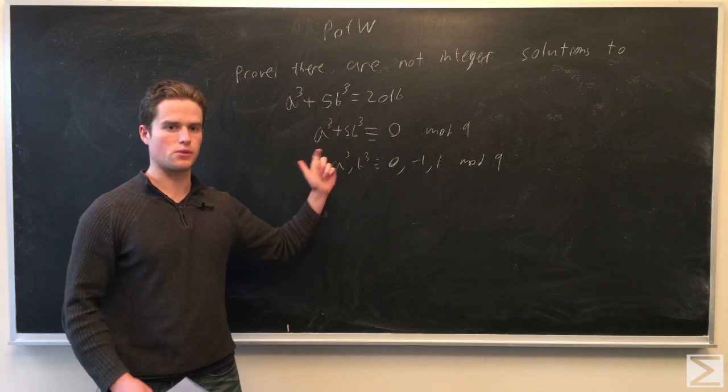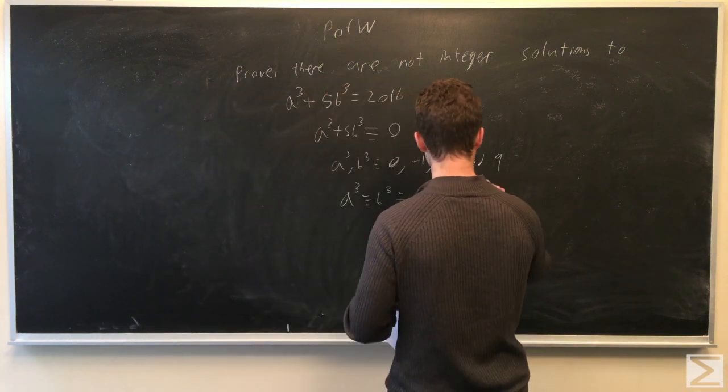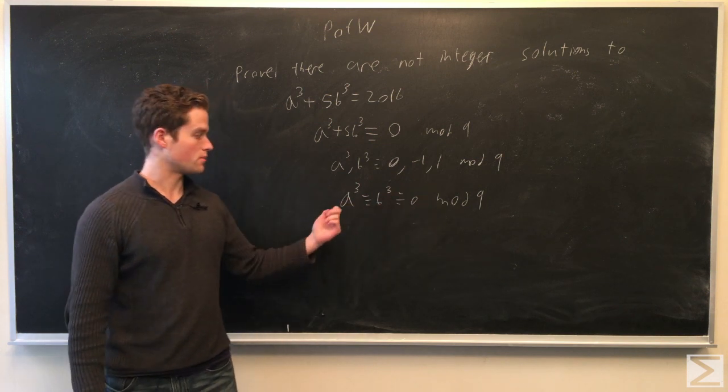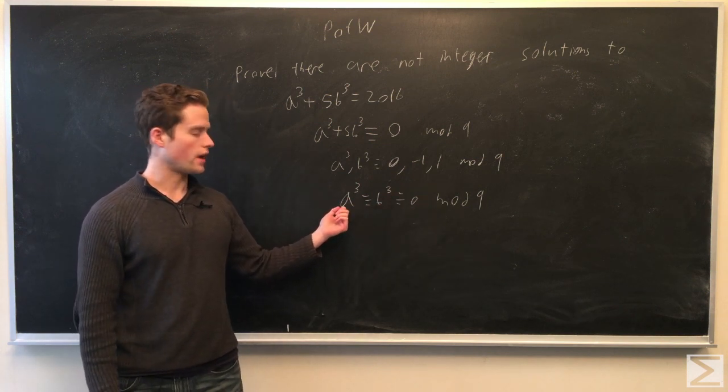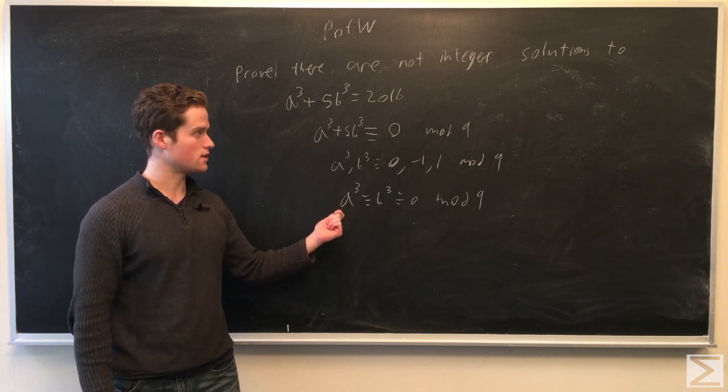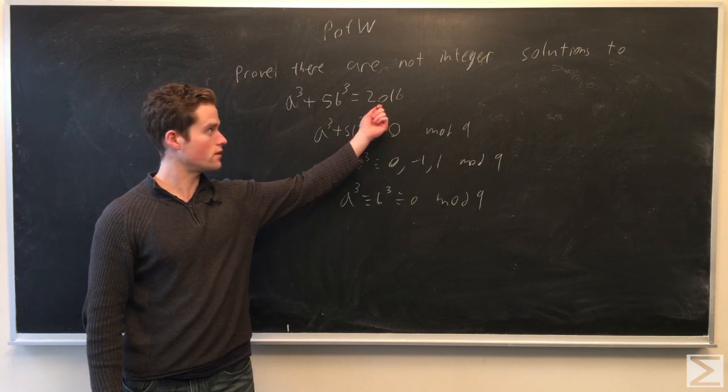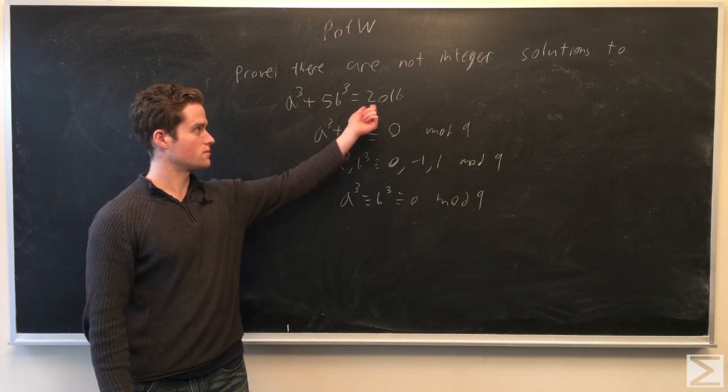And so we're left with the possibility that a³ congruent to b³ congruent to 0 modulo 9. But this implies a is divisible by 3, or a³ is divisible by 27, which implies 2016 must be divisible by 27. But this is impossible since it's not.